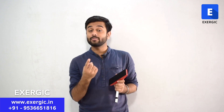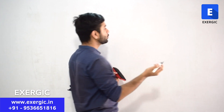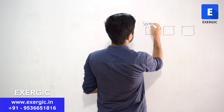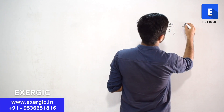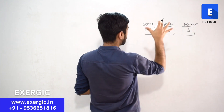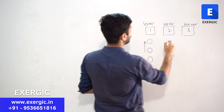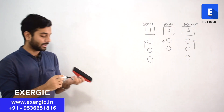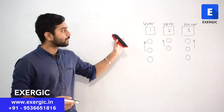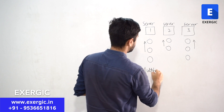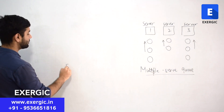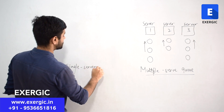Basically, the place where the members of the queue are getting the service for which they were waiting is called a server. The server can be a single one or there can be multiple servers. For example, in the video we saw there were two servers. There can be more than two servers as well — server 1, server 2 and server 3. This is an example of a multi-server or multiple server queue. Similarly, there can be a single server queue as well.